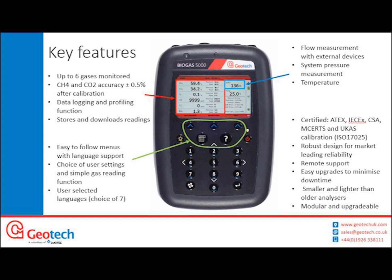The analyzer was designed to be easy to use. There is a question mark button as a help function — whatever screen you're in, you can press it for help. An onboard tutorial function can be turned on or off, taking you through how to perform a gas, pressure or temperature reading. These prompts form a full tutorial guide so that if you've never used the analyzer before, you don't need in-depth training. There are seven user-selectable languages, and the analyzer can display pressure, temperature and flow from external devices. It is fully certified to ATEX Zone 2 for use in outdoor explosive environments.